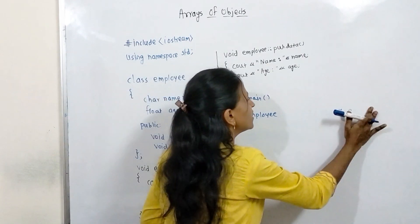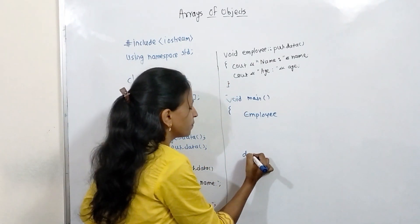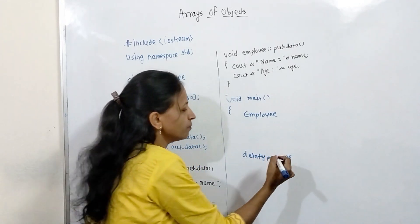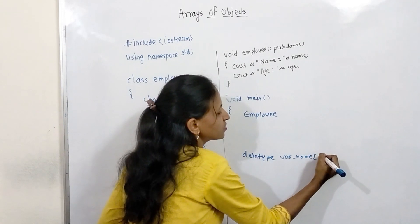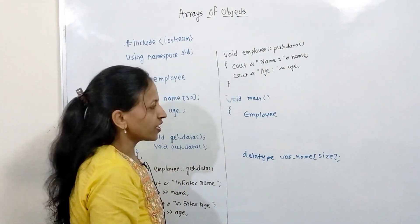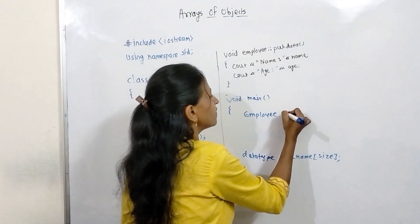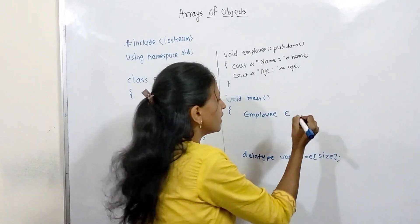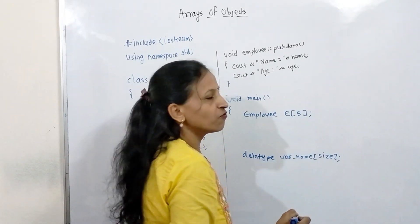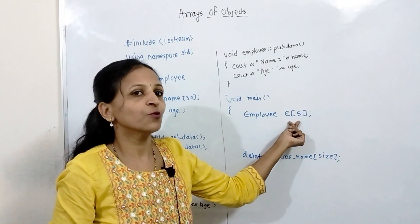Instead of creating different objects, we create an array of five objects. Normally we create an array as: data_type array_name[size]. In the same way here, we write Employee e[5]. I have created an array of five Employee objects.